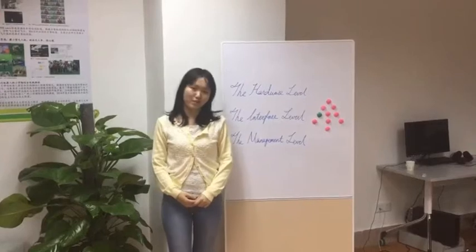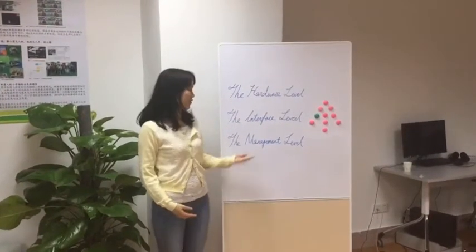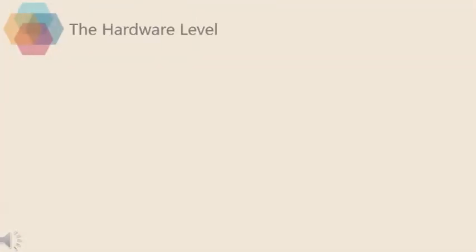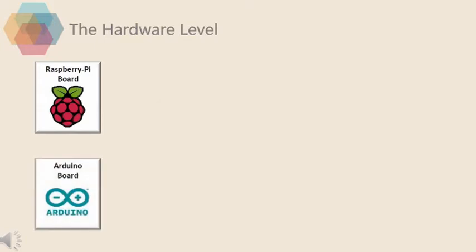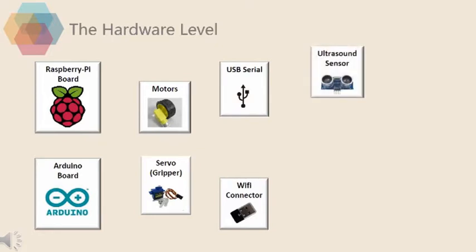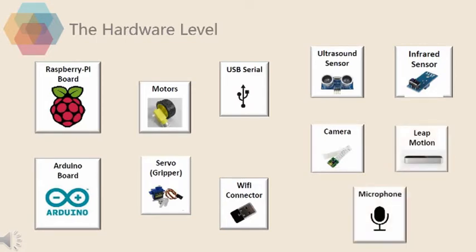The framework of our rescuing system can be divided into three levels. For hardware level, we have the Raspberry Pi, the Arduino board, the smart car, the gripper, the USB and Wi-Fi connector, the ultrasonic sensor, the infrared sensor, the camera, the LM controller, and the voice recognition device.